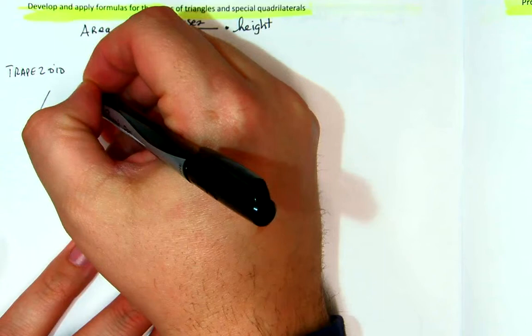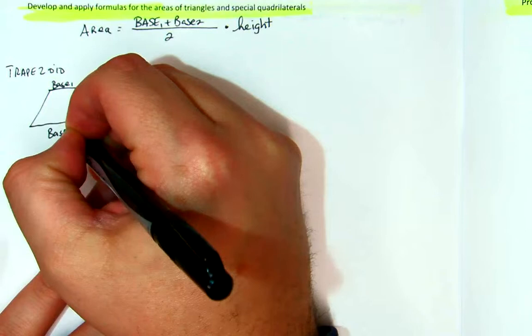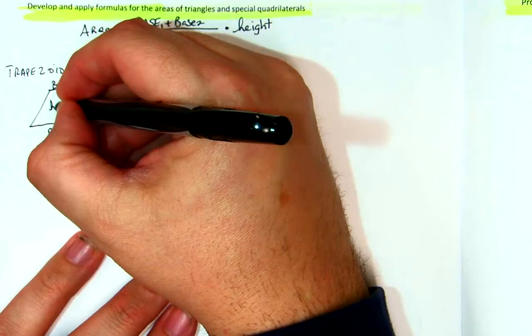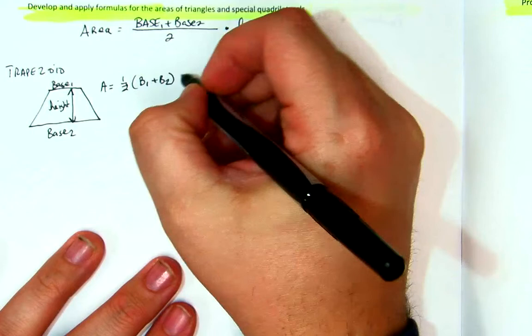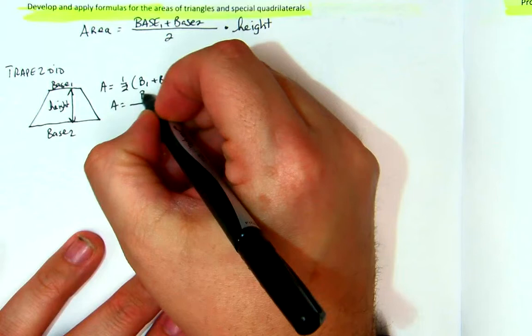This is base 1, this is base 2, or it doesn't matter. This distance between the bases is the height, and the area would be equal to one half base 1 plus base 2 times the height, which is the average of the two bases times the height, which is what we had right up there.